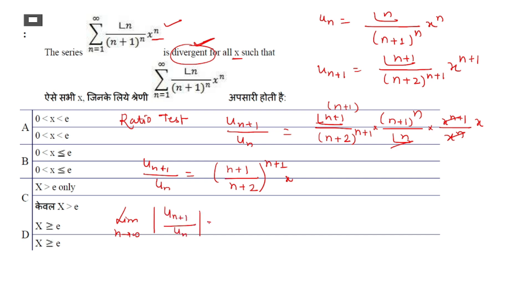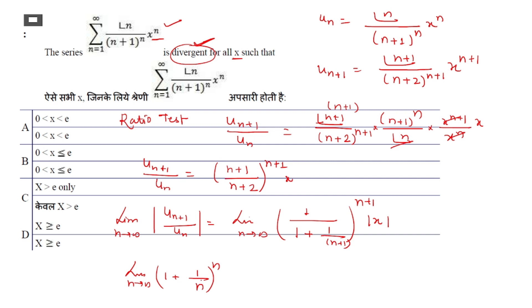Taking the limit as n→∞: we write the expression as [1/(1 + 1/(n+1))]^(n+1) · |x|. We know that the limit of (1 + 1/n)^n as n→∞ is e, so this quantity goes to 1/e. Therefore the limit equals |x|/e.